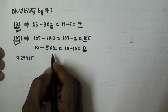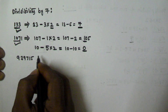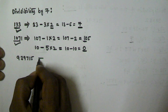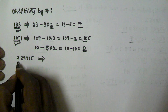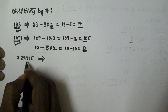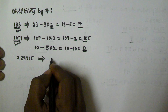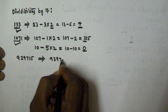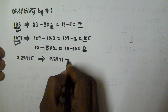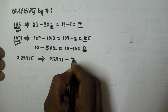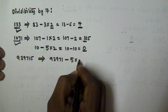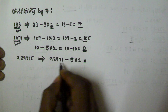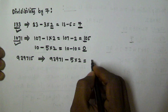Let's see another example: 939715. We will check if this number is divisible by 7 or not. We take all digits except the unit digit, which is 93971, then subtract the unit digit 5 multiplied by 2 — that is 10. So 93971 minus 10 gives us 93961.